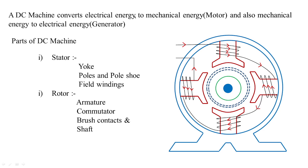A DC machine converts electrical energy to mechanical energy, which we term a motor, and also mechanical energy to electrical energy, which we term a generator. This is a four-pole machine where four poles are placed perpendicular to each other, so that the induced voltage is obtained between these poles and impacts the rotating part. Broadly, the DC machine is divided into two parts: the stationary part known as the stator — which has components like yoke, poles, pole shoe, and field windings — and the rotor part, which consists of the armature, commutator, brush contacts, and shaft.